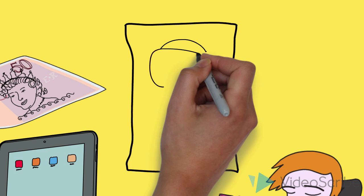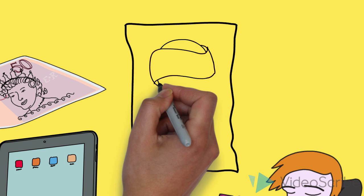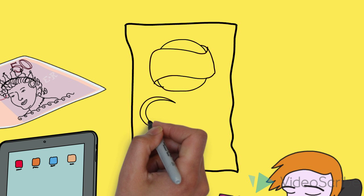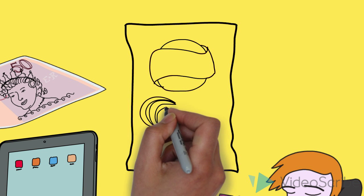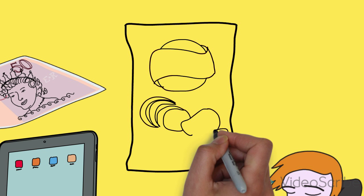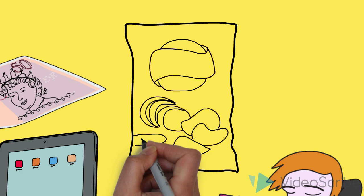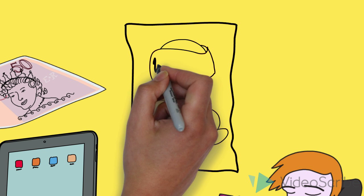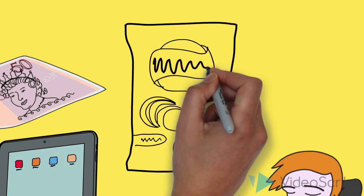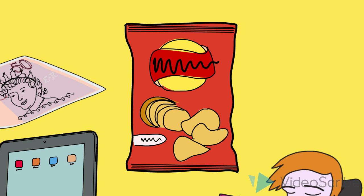Some businesses opt to change the packaging of their product. Walkers, for example, opted to swap the colours of their cheese and onion and salt and vinegar flavours around.